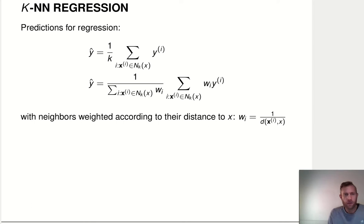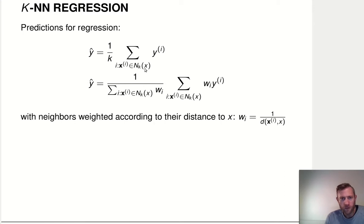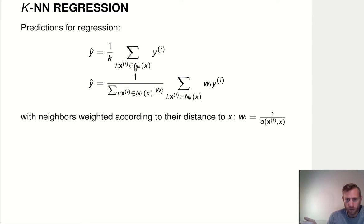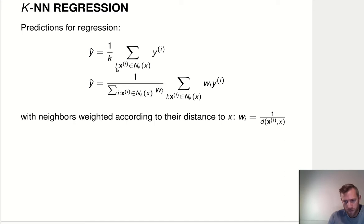How does K nearest neighbors work? In the simplest case, we figure out what the relevant neighborhood is: we look at the feature vector x for which we want to generate predictions, determine which observations in our training dataset are among the K closest neighbors, then look up the values of the target variable for those observations and take the mean over this K neighborhood. That mean becomes our prediction for this feature vector x.